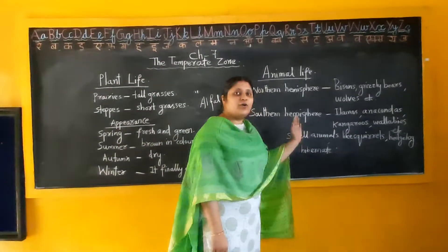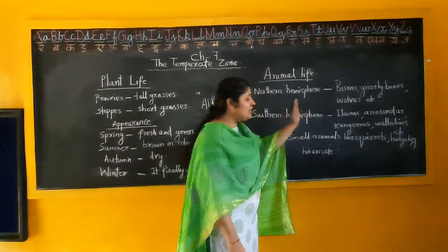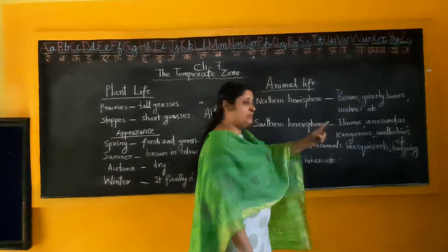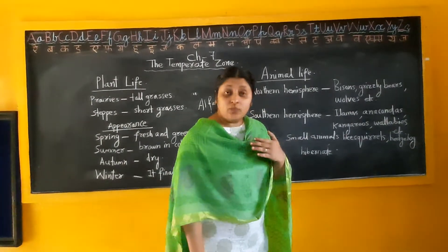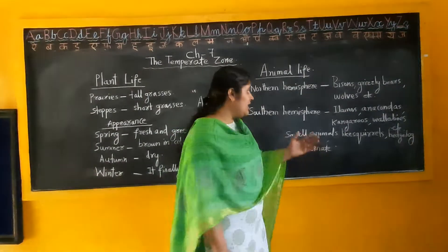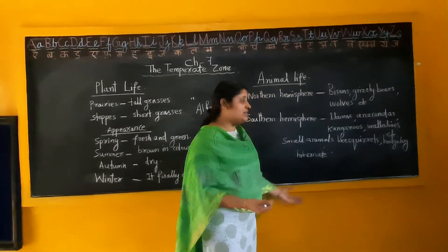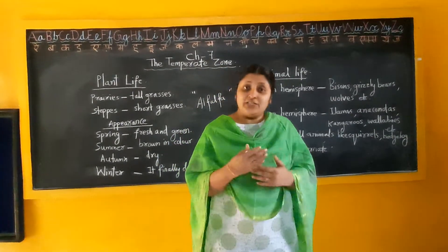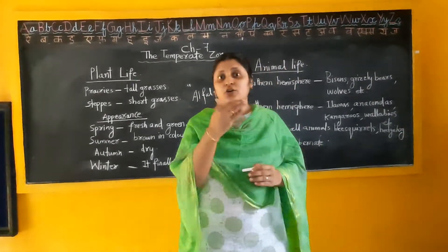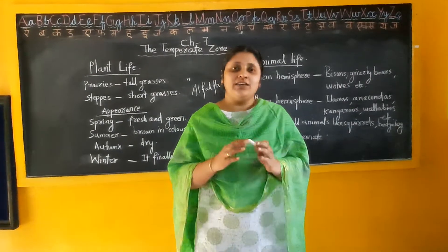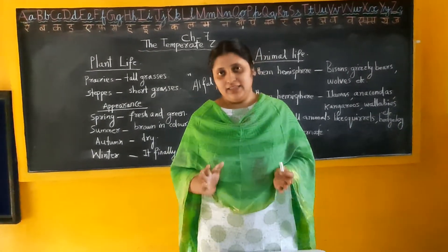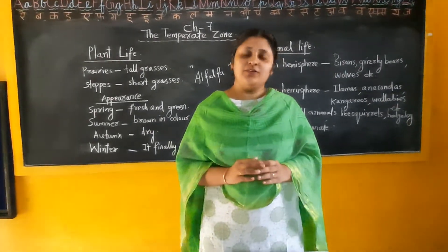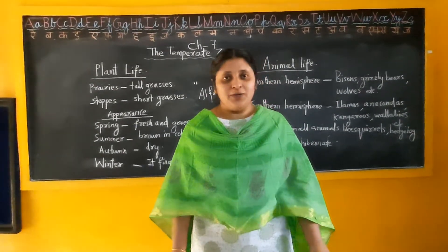So in the north temperate grasslands we can see bison, wild horses, and similar animals, while in the southern hemisphere grasslands we see llamas, anacondas, kangaroos, wallabies, squirrels, and hedgehogs. That is about the animal life in the temperate grasslands. These two topics are easy to learn — please read your textbook. We will meet in the next video. Thank you.